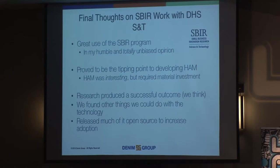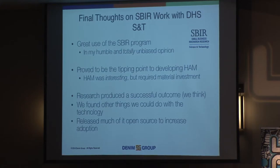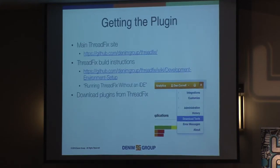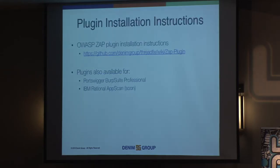All the plugins we're talking about you can download from the links provided, or build the Threadfix community edition from GitHub. Here are some instructions for installing the ZAP plugin to look at the stuff we're doing. From this attack surface enumeration, we're going to find all of the URLs and all the parameters that are going to change the application behavior. We're also working on enhancing the system to add cookies, HTTP headers, and other points of attack surface.